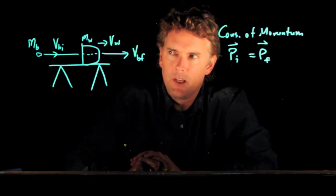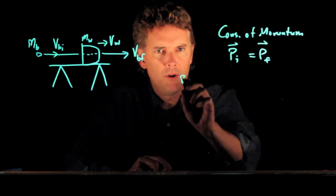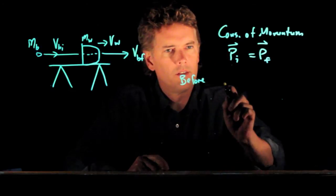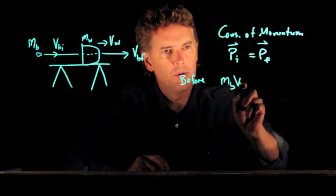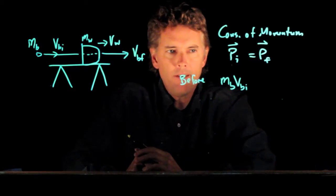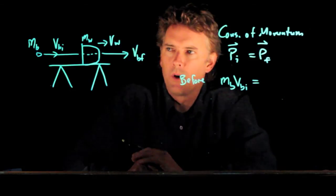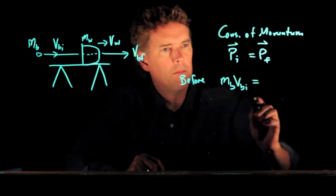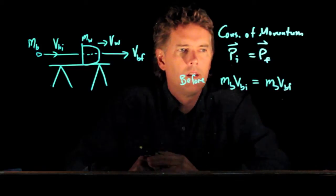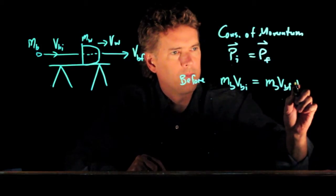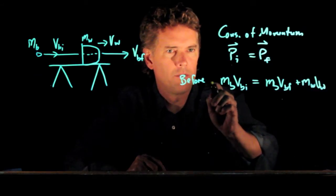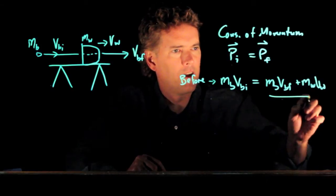If we think about the initial momentum of the system before the collision, all we have is the bullet. The mass of the bullet times the speed, the initial speed of the bullet. After the collision, what are we going to have? Well we also have the block. Okay so this is before and this stuff is after.